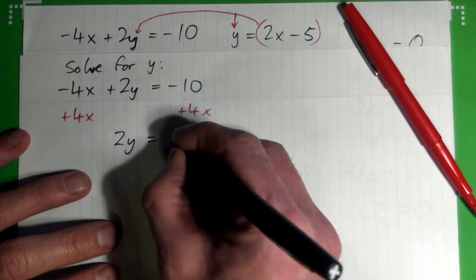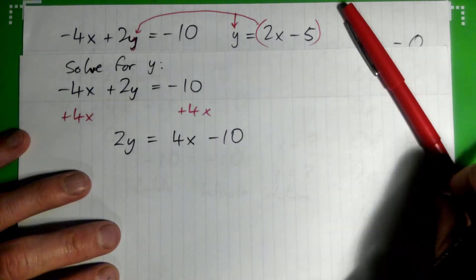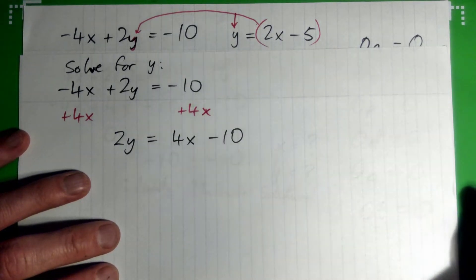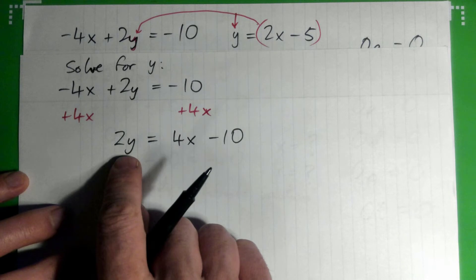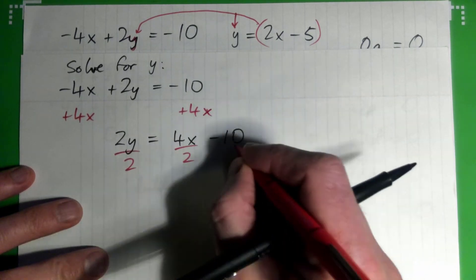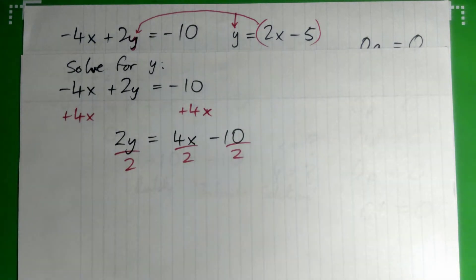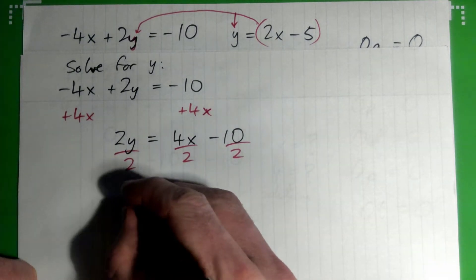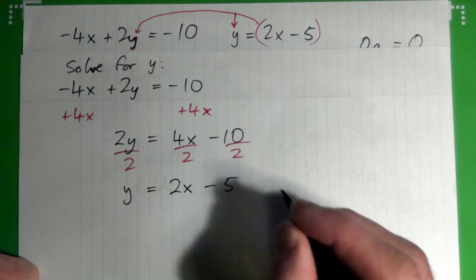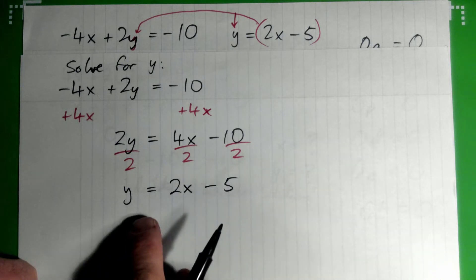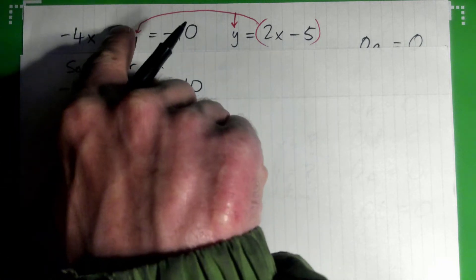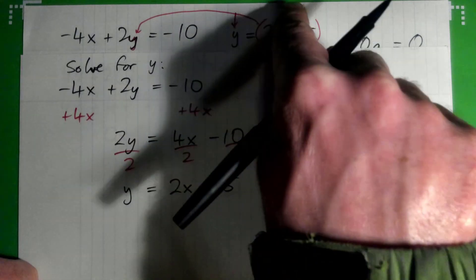We get 2y equals 4x minus 10. It's more standard to put the x term on the left and the number on the right — though it doesn't matter. Now divide everything by 2, and we get y equals 2x minus 5.